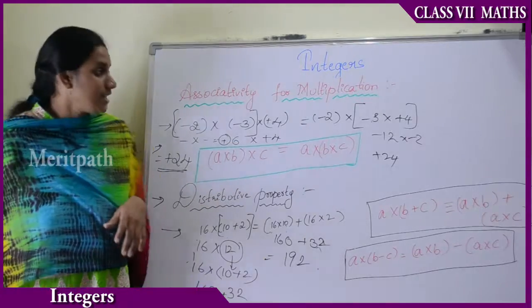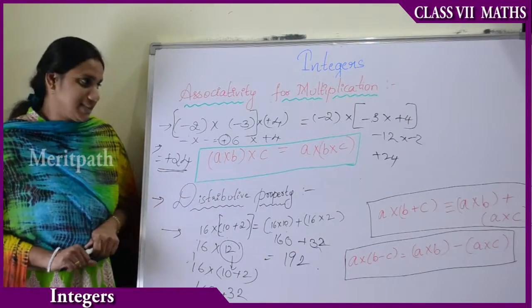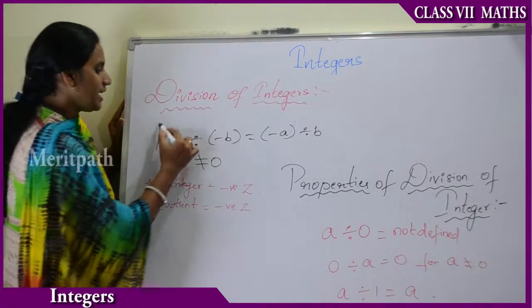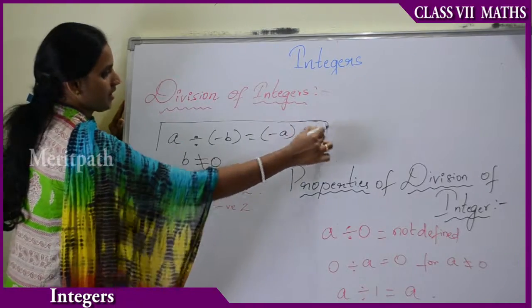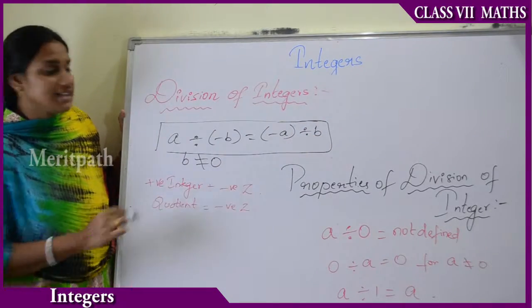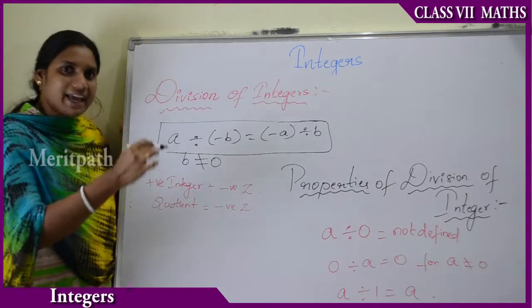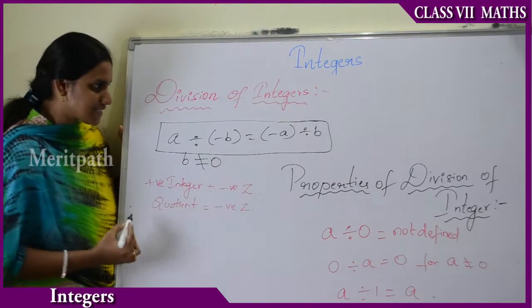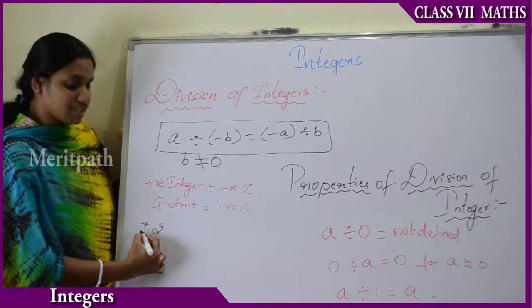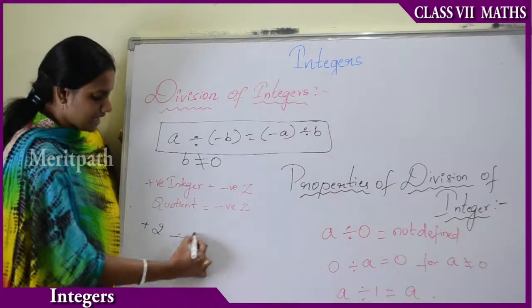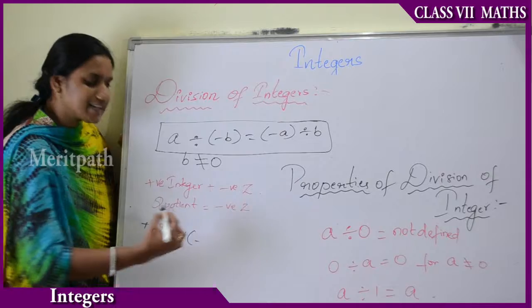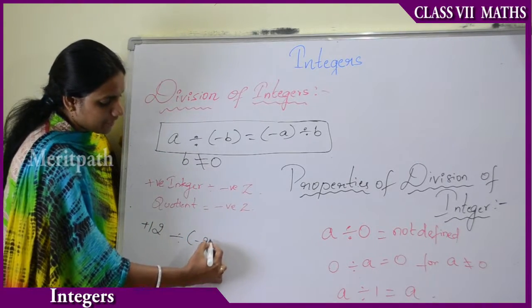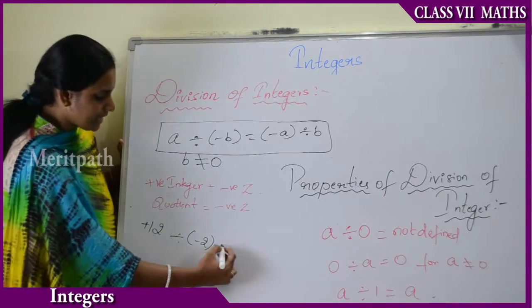Now let us see the division of integers and their properties. The first statement is: A divided by minus B equals minus A divided by B. To explain this with an example, let us take positive 12 divided by minus 2.